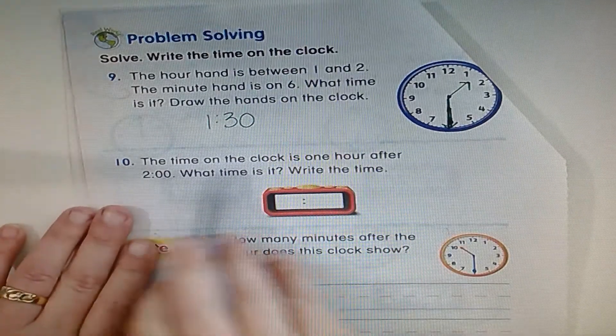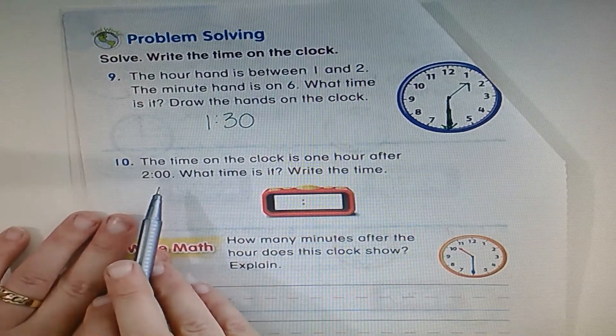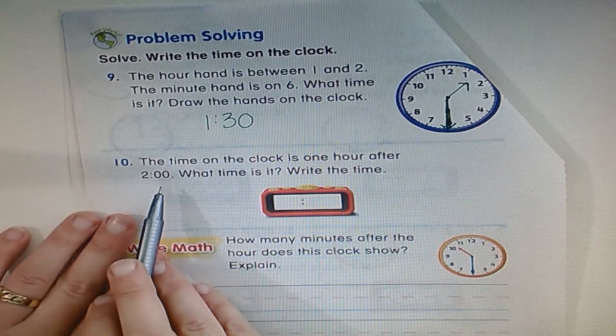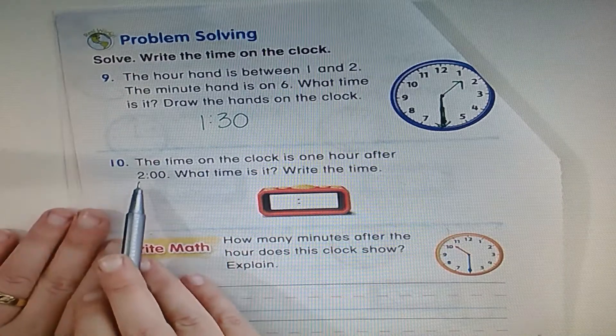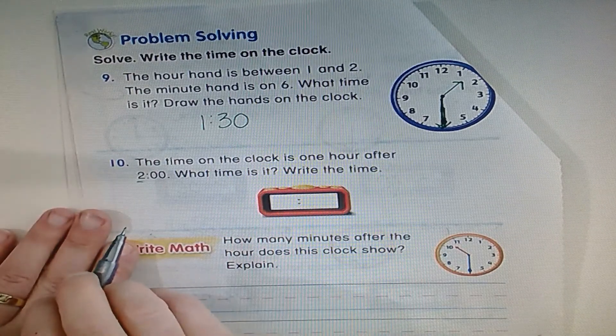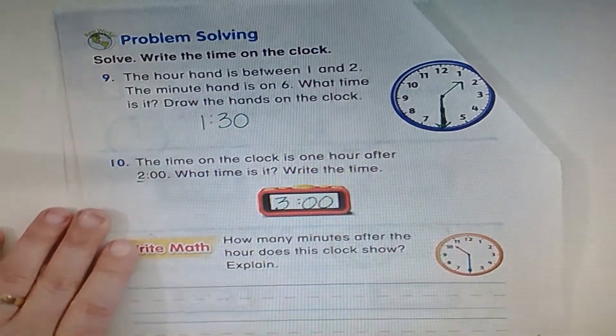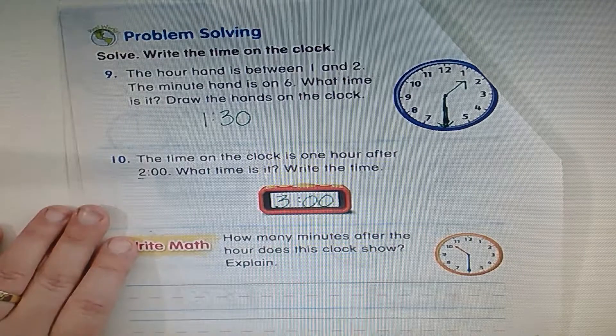The time on the clock is one hour after two. One hour after two, what time is it? We add an hour to the hour side. This is the hour side. So two plus one more hour would be three o'clock.